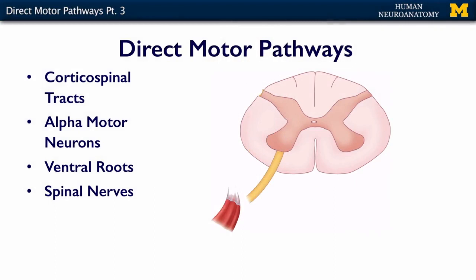This gets down to the last part of this direct motor pathway: our alpha motor neurons here send their information out to the actual muscles. The corticospinal tract represents one neuron, all the way up in motor cortex, that has sent its axon all the way down through the internal capsule, through the brain stem, and partially or all the way down the spinal cord to synapse on an alpha motor neuron. That alpha motor neuron then takes the information and exits through the spinal nerves to innervate the muscles.